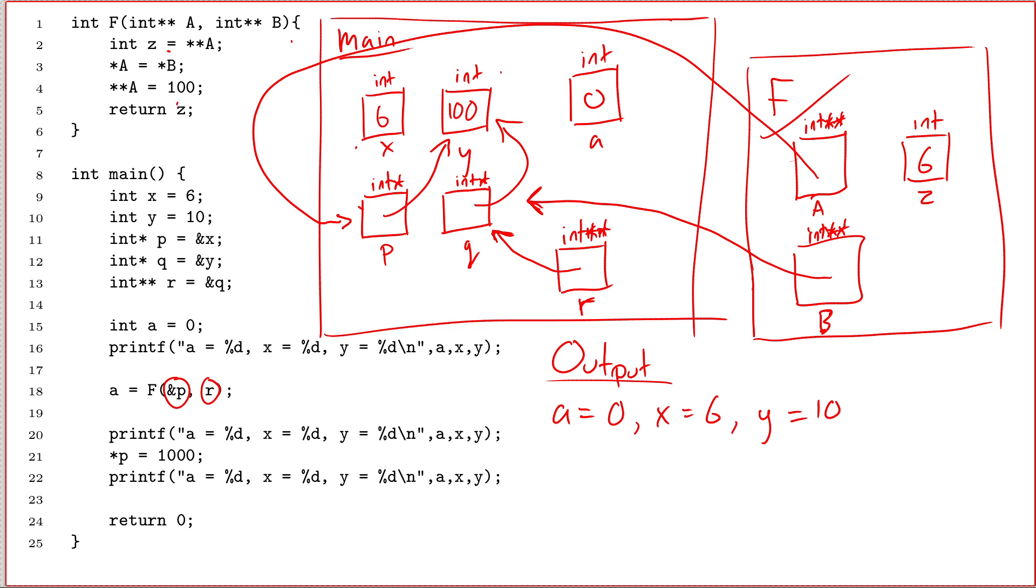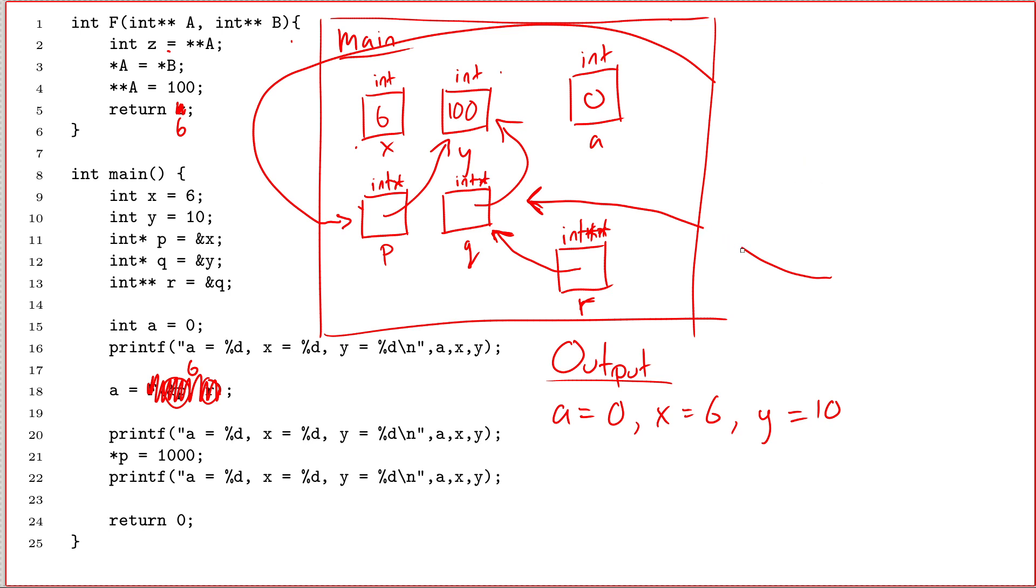And then the function says return z. So as usual, in the scope of f, the value of z is 6. So my return value is 6. Which means I go back down to main, and I sub in the value 6, where I had the function call. And then the function f ends. All right, this is going to be fun. So there's that. And then let's see what we can do about these arrows. I need to get a bigger eraser.